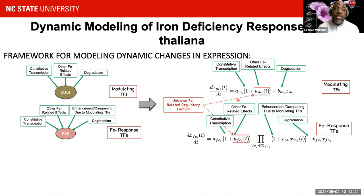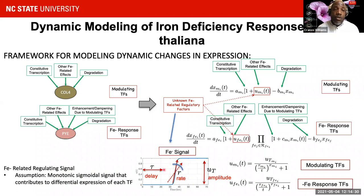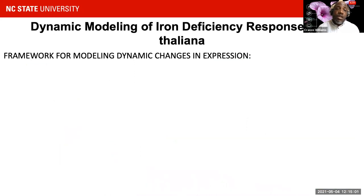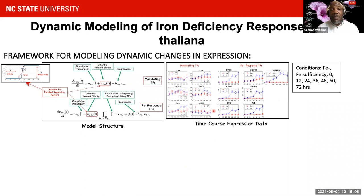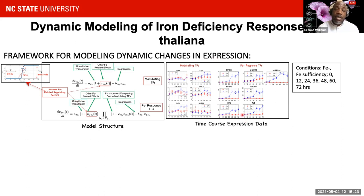In terms of the overall framework, we first needed to conceptualize the factors influencing both the modulating transcription factors and the iron response transcription factors. This included constituent transcription, degradation, and the influence of other transcription factors. We incorporated the effects of other iron deprivation-related influences on gene expression. We translated this conceptual idea to a mathematical equation, using a simplifying assumption that these other iron-related effects behave as a monotonic signal with an amplitude, a delay, and a rise rate. We then combined this with qRT-PCR time-course data at 0, 12, 24, 36, 48, 60, and 72 hours.